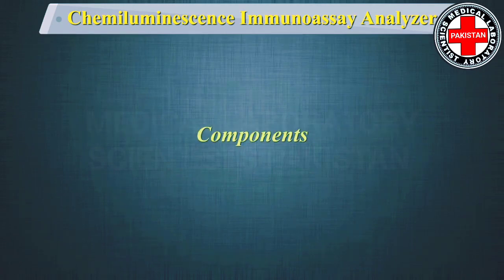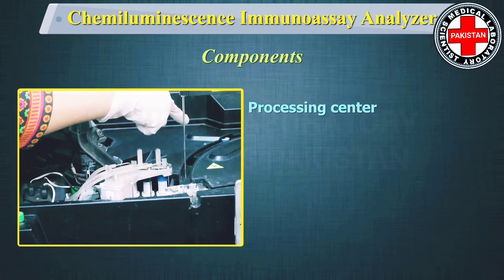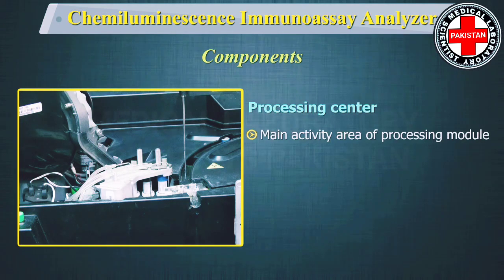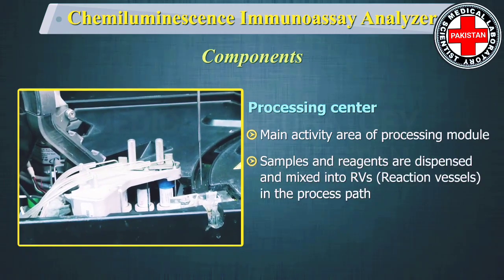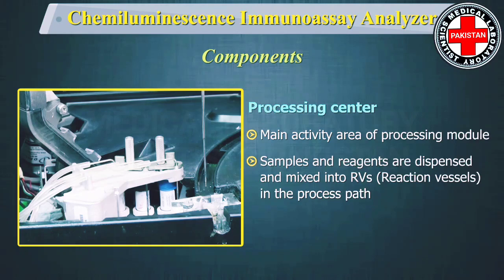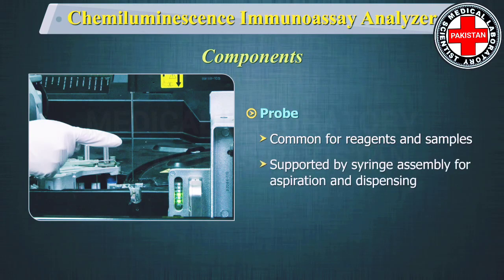Most chemiluminescent immunoassay machines have the following main components. The processing center is the main activity area of the processing module, where samples and reagents are dispensed and mixed into reaction vessels in the process path where assay processing is performed. A probe, which is common for reagents and samples, is supported by the syringe assembly for aspiration and dispensing.